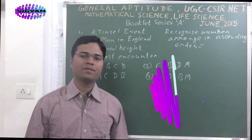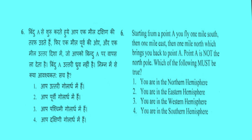The questions are from Booklet Series A. Problem number 6: Starting from Point A, you fly 1 mile south, then 1 mile east, then 1 mile north, which brings you back at Point A. Point A is not the North Pole. Which of the following must be true? Option 1: You are in the Northern Hemisphere. Option 2: You are in the Eastern Hemisphere. Option 3: You are in the Western Hemisphere. Option 4: You are in the Southern Hemisphere.